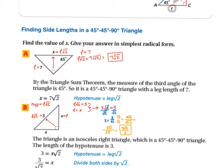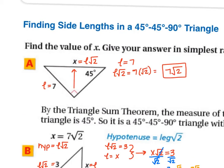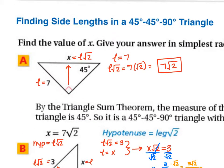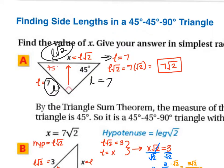Find the value of X; give your answer in simplest radical form. It's a right triangle with one 45° angle, so the other must also be 45°. Opposite the 45° angles are the L sides, and opposite the 90° is L√2. The given side tells us L = 7, so the other leg is also 7, and the hypotenuse is 7√2.